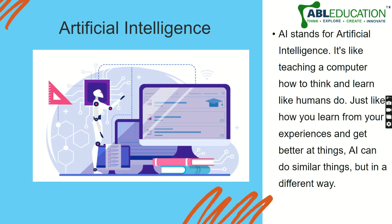Artificial intelligence, that is AI, is a way of teaching computers how to think. Let me give you a quick and simple example. Suppose you bring a puppy home. Initially, your puppy does not know anything — how to go for a walk, how to sit, how to stand and do things on your instructions.